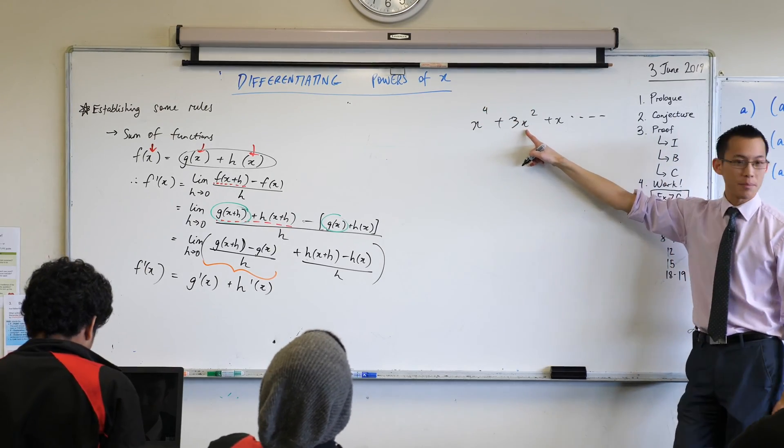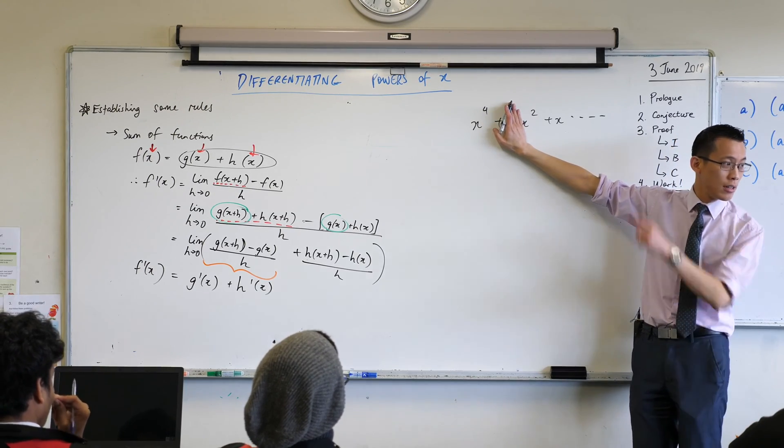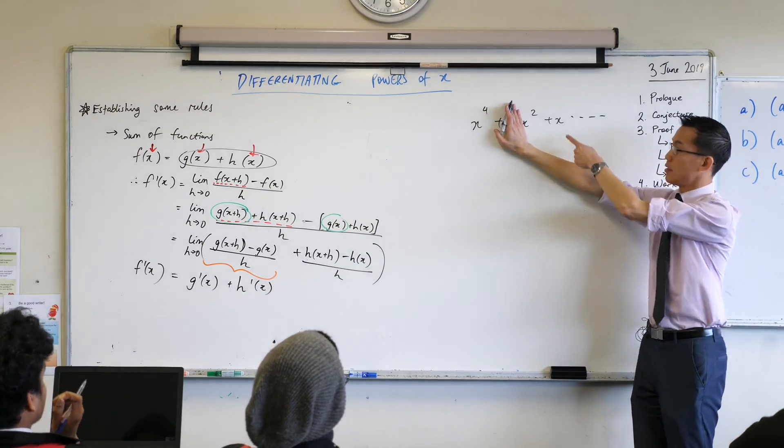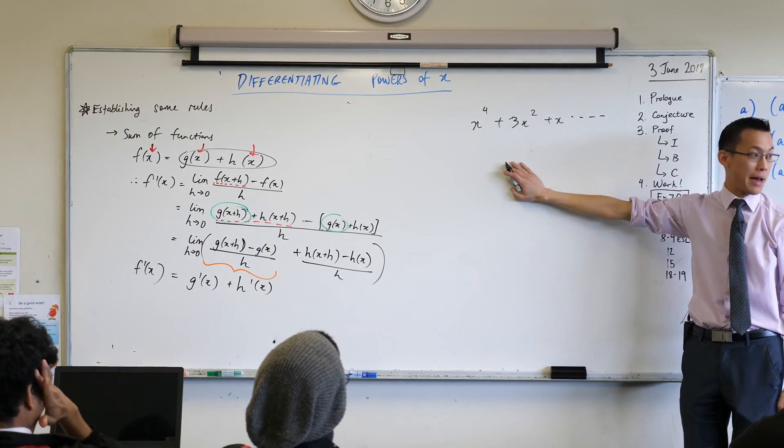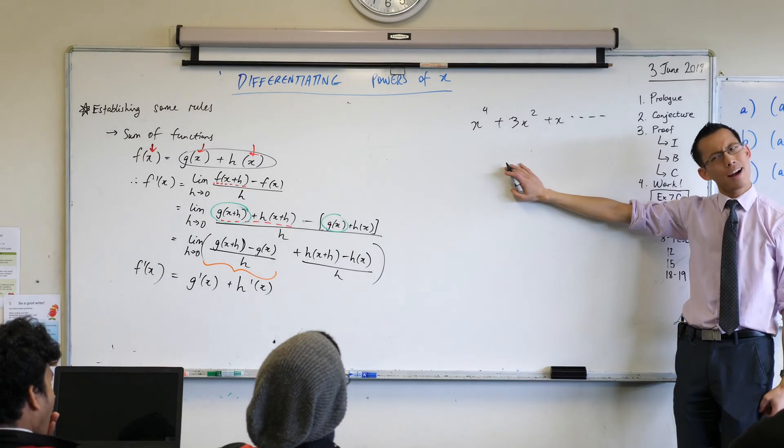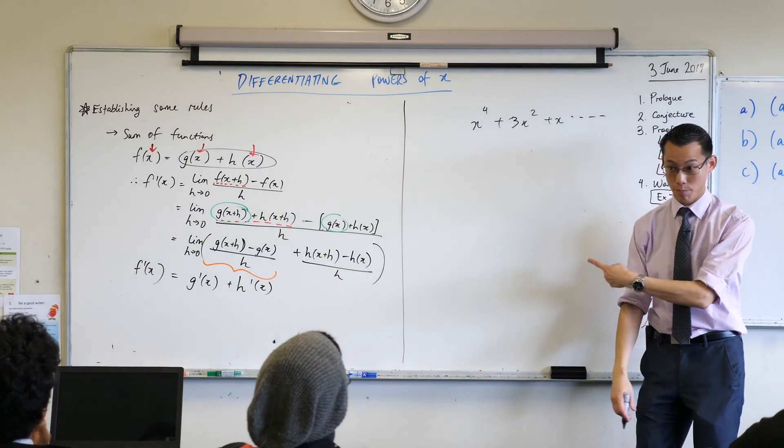And then we said to you for something like this, you're like, oh just forget about that 3 for a minute, right? What happens to the x squared? 2 comes out the front, 2 becomes a 1, so that's just 2x, and then we said, oh now put it back, right? Now, how can we just say that? Well, I'm going to go back to first principles.